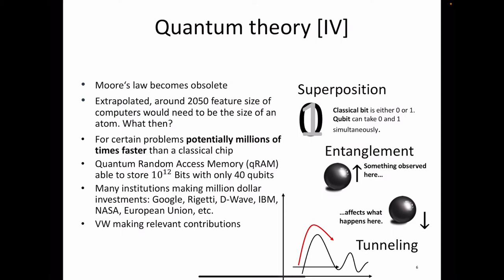For certain problems, a quantum computer can be potentially millions of times faster than a classical one. But remember, a quantum computer is not made to replace classical chips in every aspect. Quantum chips are coprocessors — you take the really tricky, difficult part of a problem and solve that quantumly; the rest can still be done classically. There is no need to replace all classical chips with quantum chips. Why would you need a quantum computer to browse the internet? That's not needed.